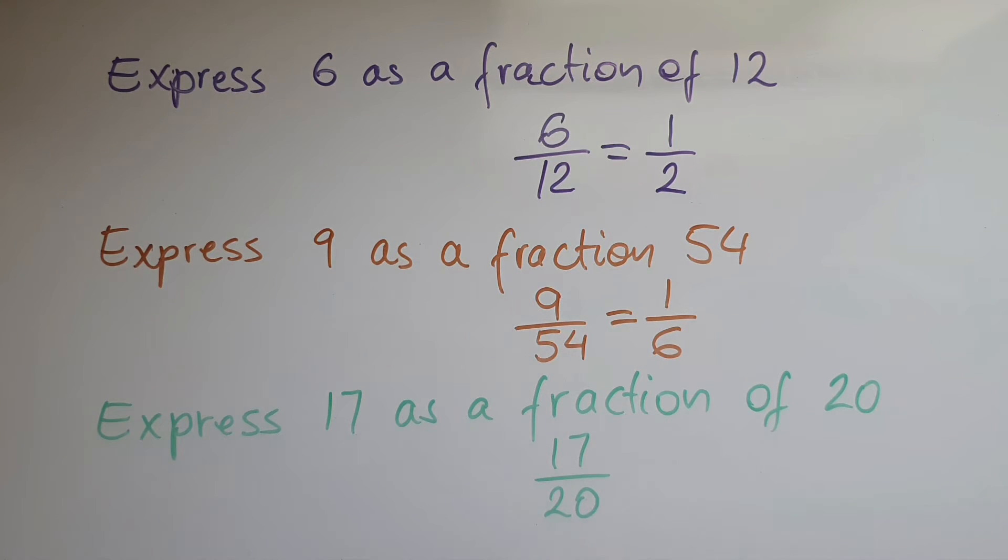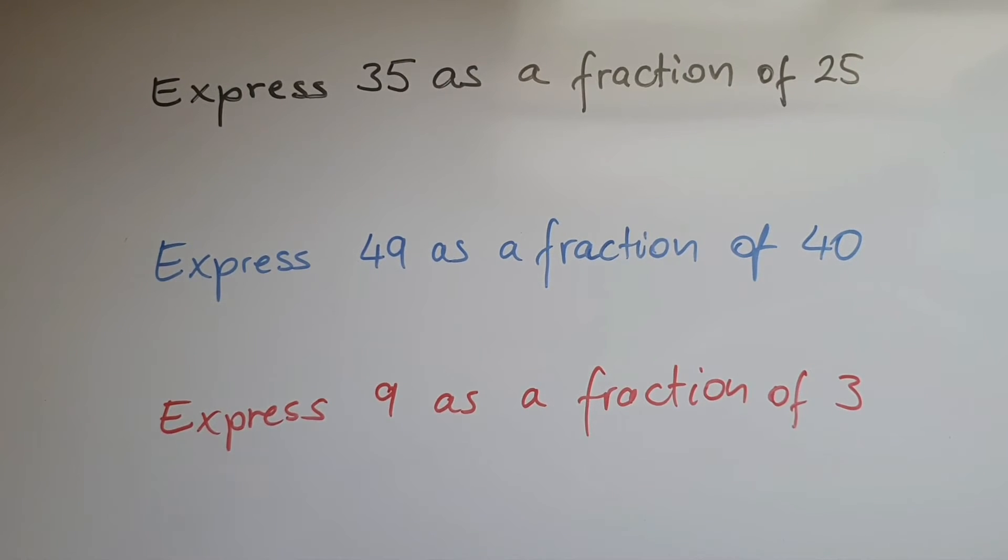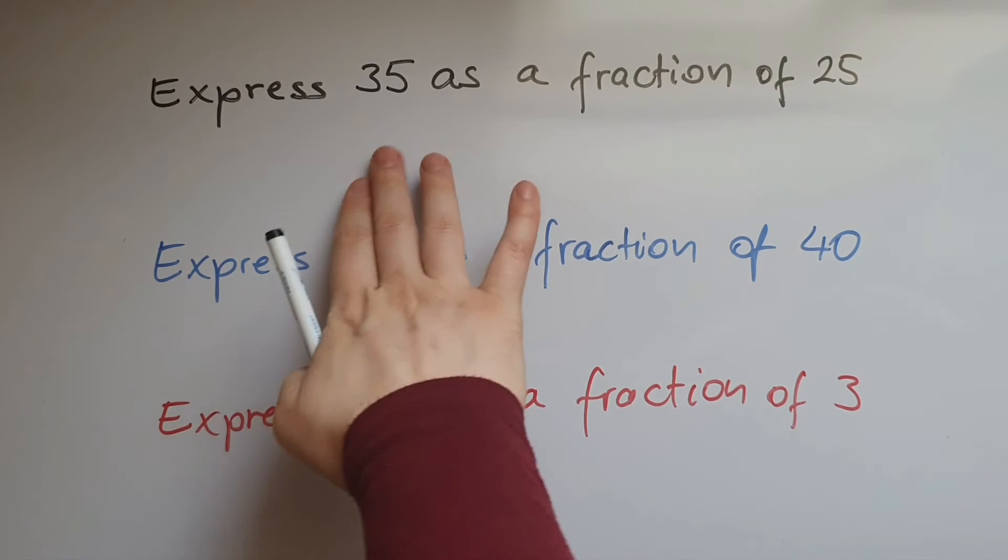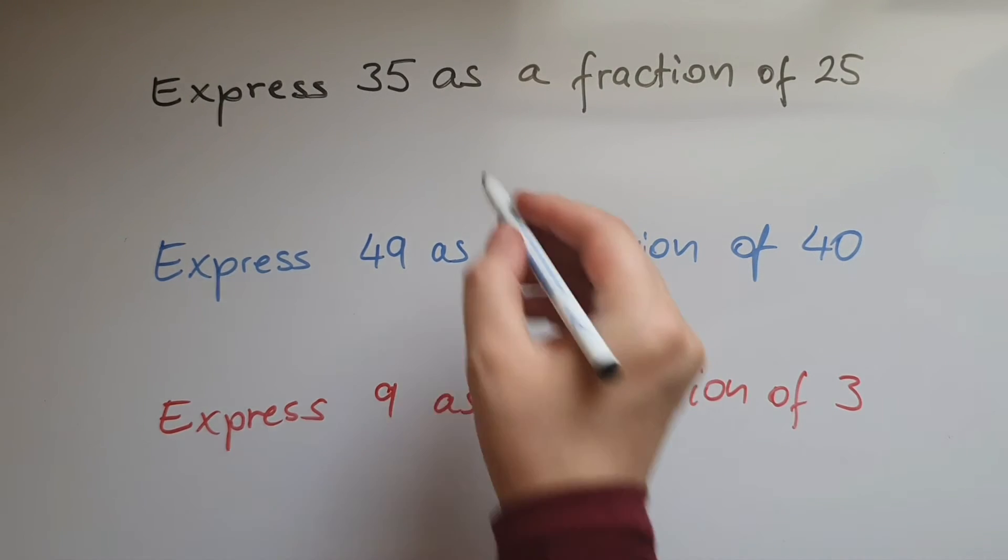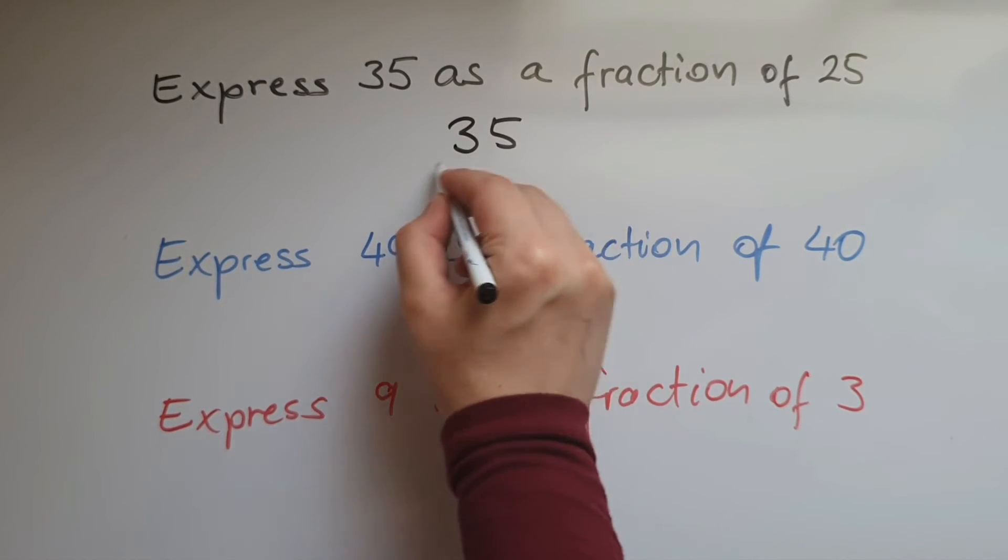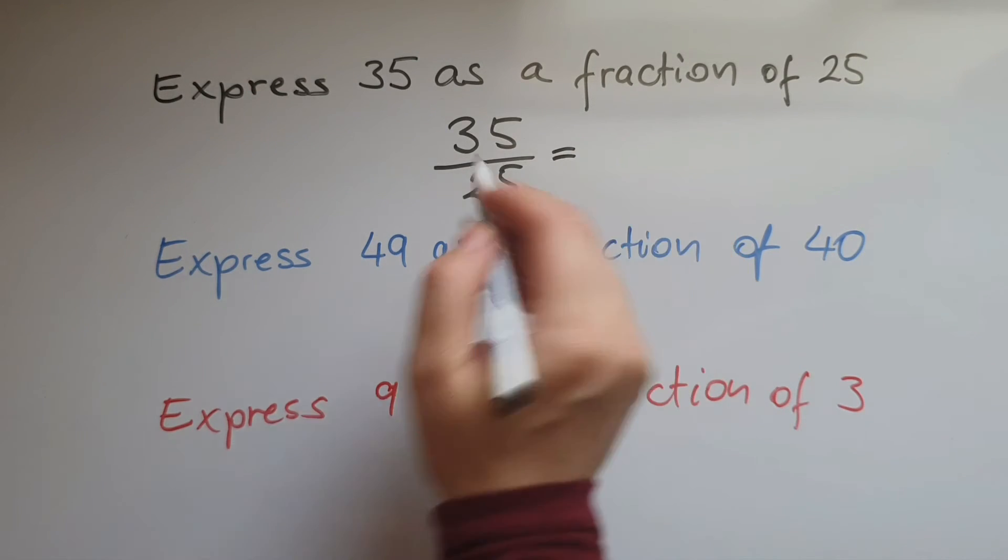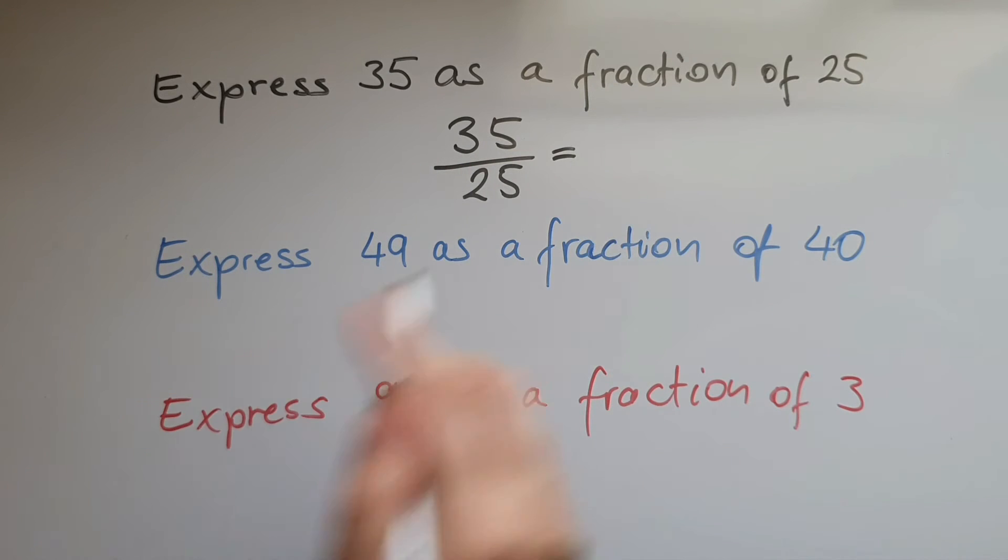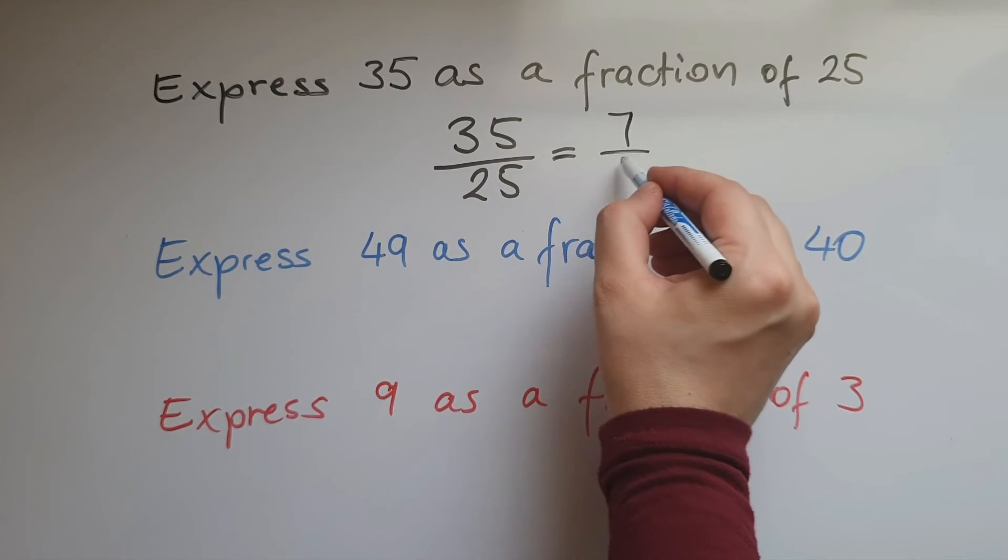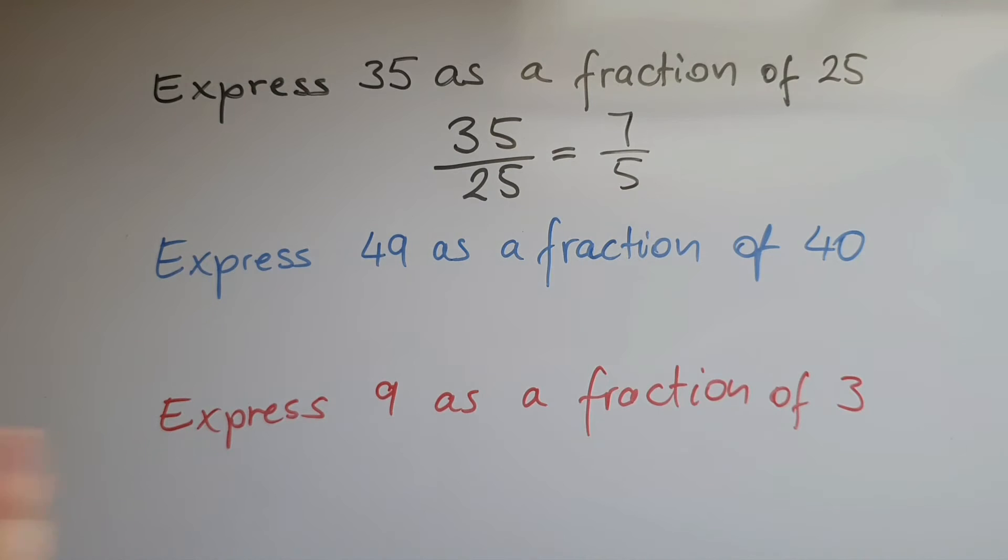Express 35 as a fraction of 25. So 35 over 25. We've done it, but we can simplify this further because both of the numbers can be divided by 5, so that gives us 7/5. And we can't go any further, so we've got to leave it there.